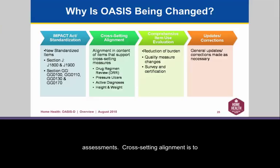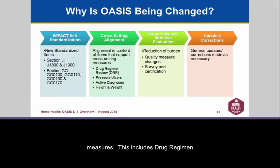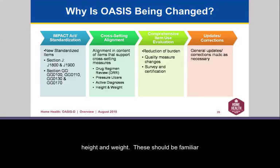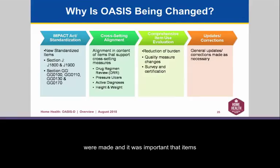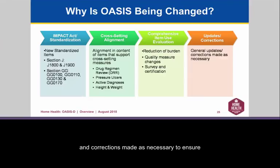That refers to the new standardized items that will be the same across all settings — the two J questions, J1800 and J1900, and the four GG assessments. Cross-setting alignment brings specific items into alignment for cross-setting measures, including drug regimen review, pressure ulcers, active diagnoses, height and weight. Comprehensive item use evaluation also focused on reduction of burden on providers, with quality measure changes and alignment with the survey and certification process. Lastly, general updates and corrections were made to ensure all information is accurate and clear.